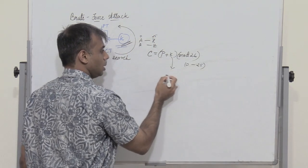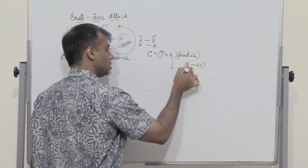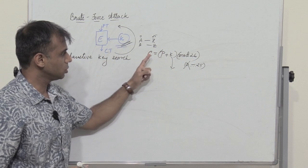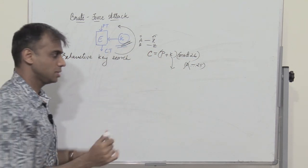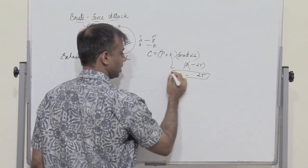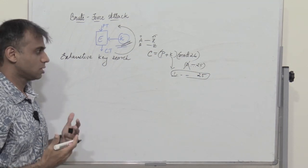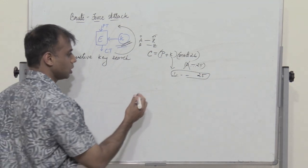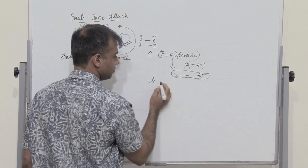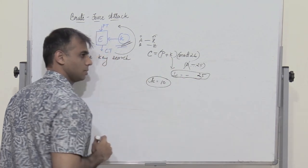So we can possibly have the value of k as 0, 1, 2, 3 up to 25. The value of k equal to 0 is not used because if k is 0, the ciphertext equals the plain text. So essentially we have 25 possible keys, 1 to 25. Now let's assume that the encryptor uses one of these 25 keys — let's assume that it is 10 — and then performs encryption.